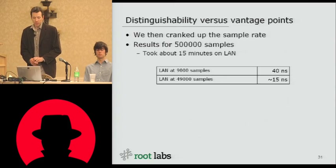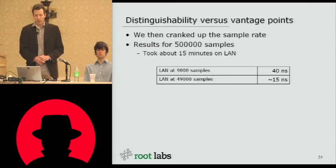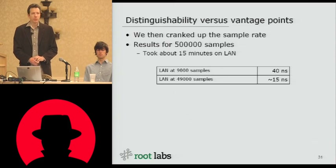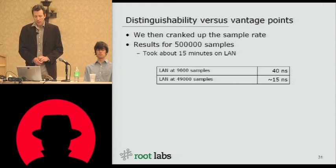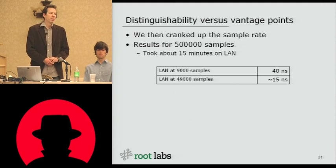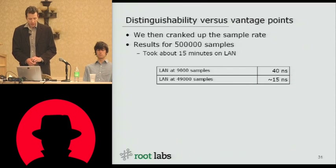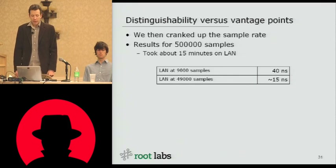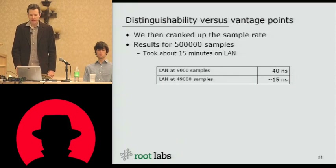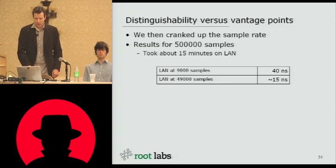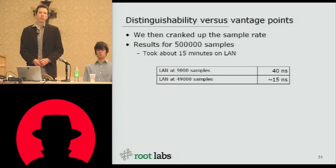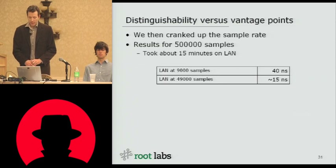We then cranked up the sample rate. We haven't finished taking samples for all data sets, but at least for LAN we were able to improve results significantly. 500,000 samples sounds big, but it doesn't take very long — on LAN it took about 15 minutes per run. We found we were able to improve to about 15 nanoseconds distinguishability by selecting 490,000 from 500,000 samples and doing false positive and false negative testing. These numbers are still subject to review, but the key takeaway is that we got almost a factor of three improvement just by taking more samples — so if in doubt, just take more samples.